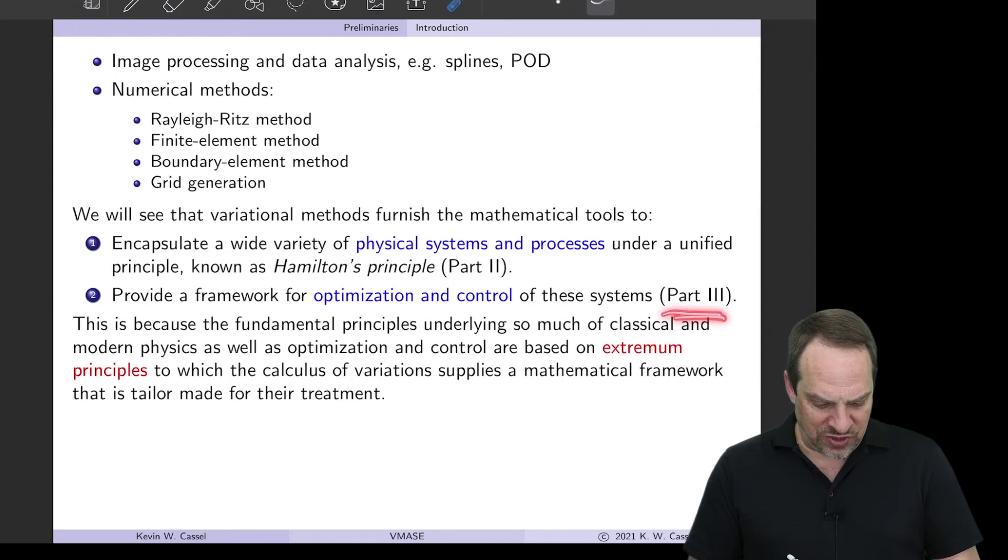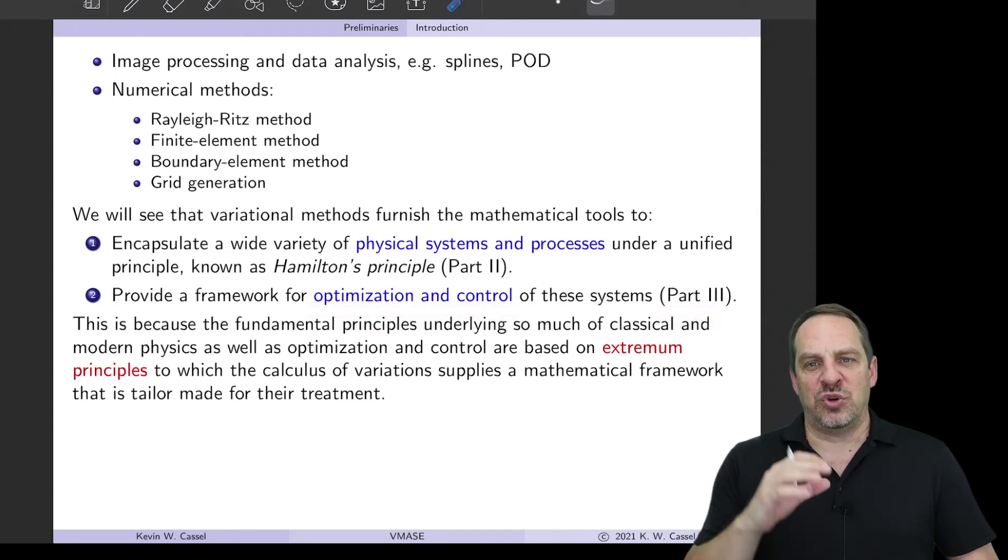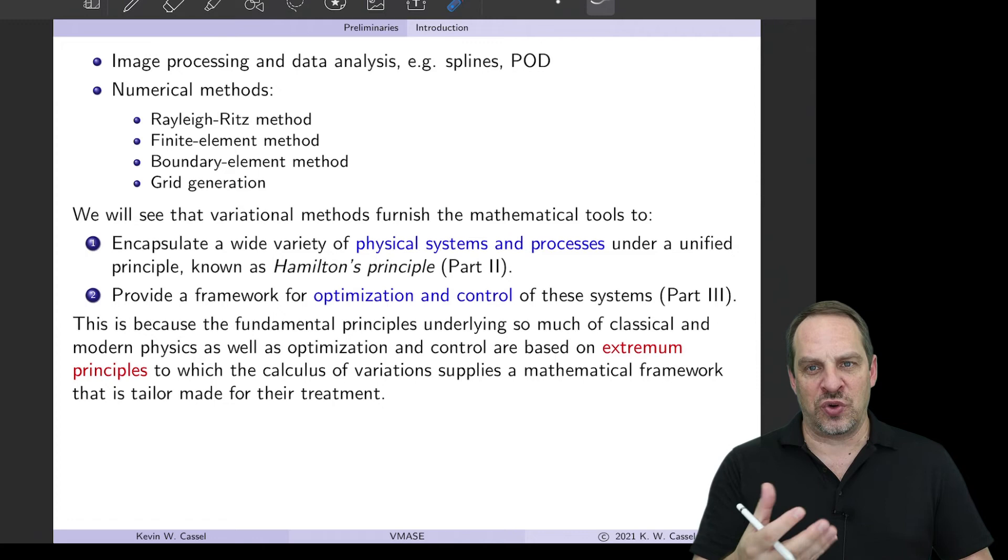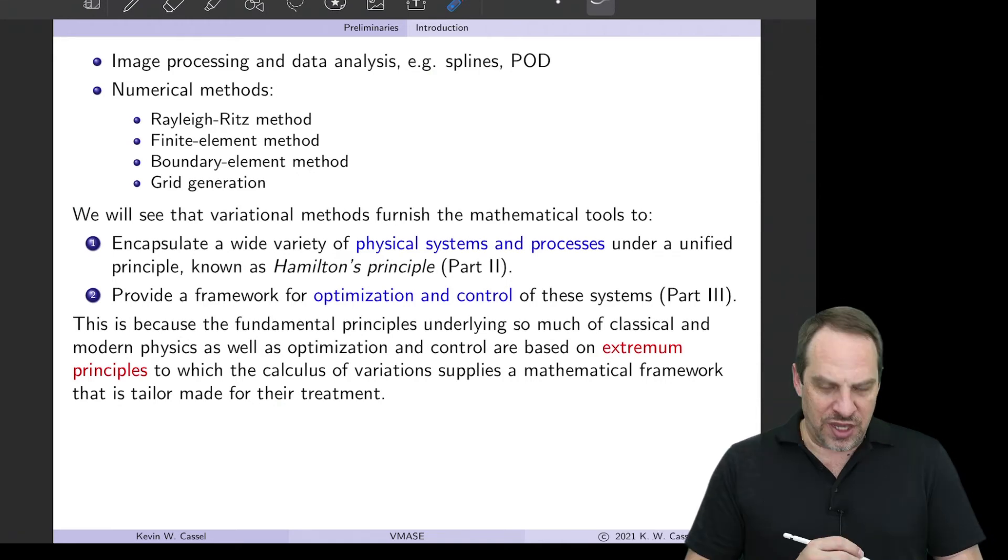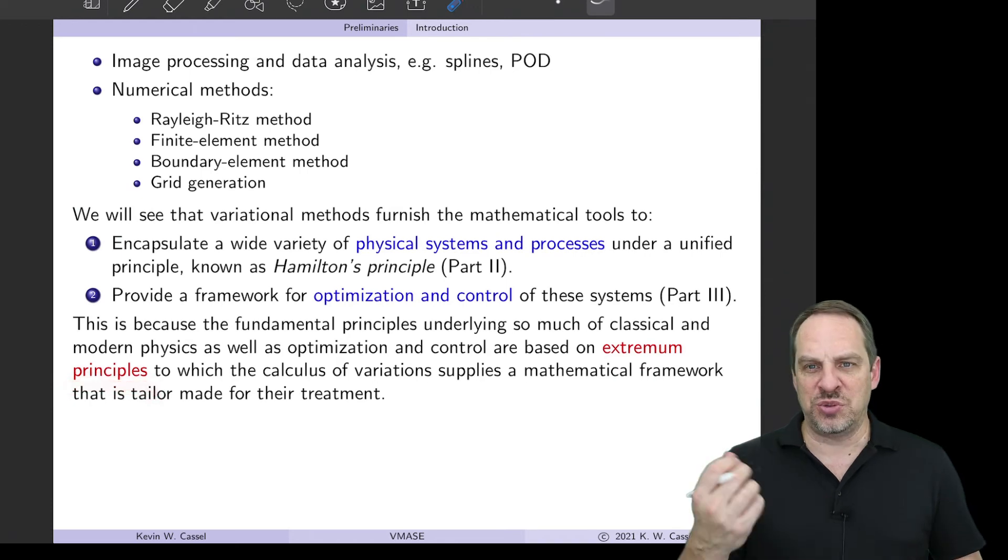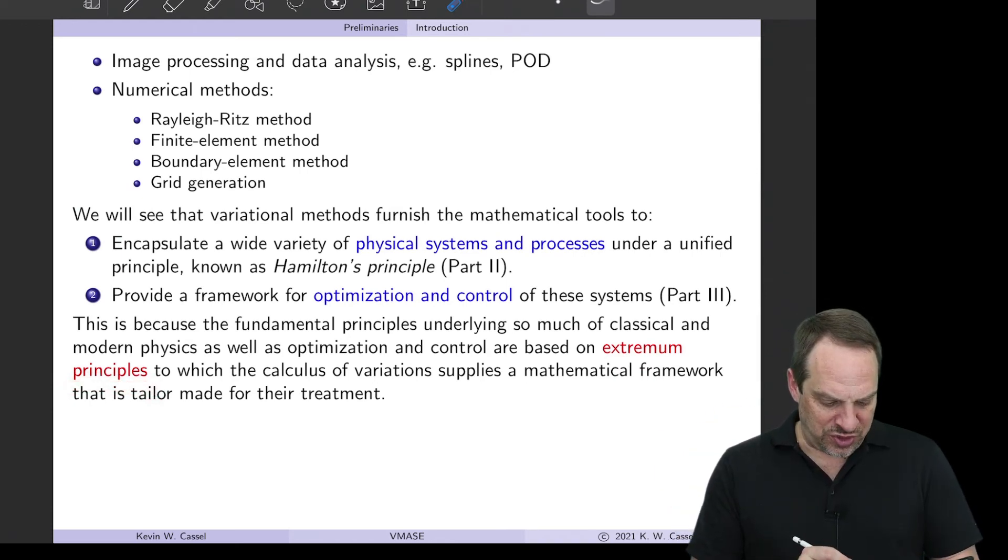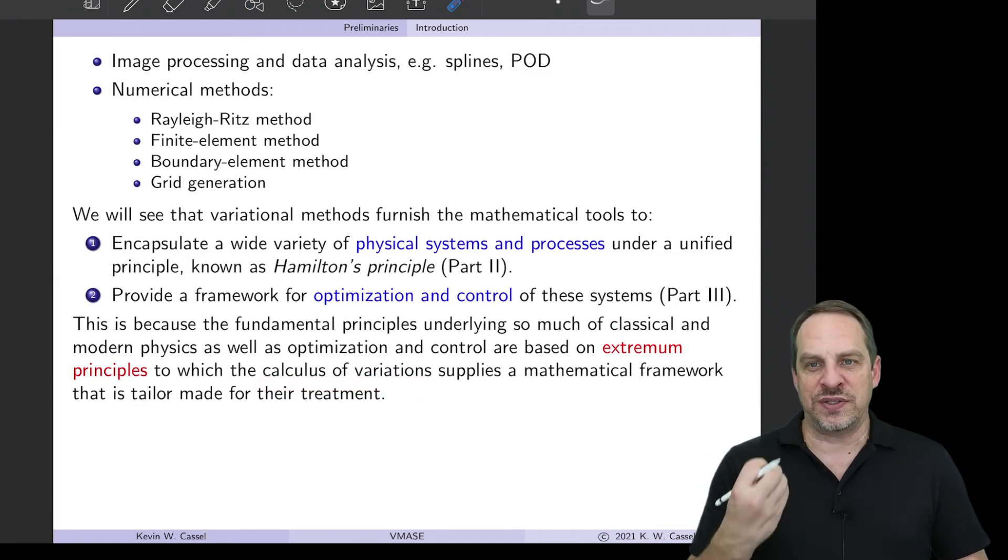And then all of part three is going to focus on the optimization and control of those systems. So both the physics behind how the system behaves, as well as our ability to control it in an optimal fashion, are both based on variational principles. And so this is going to be a really unifying, you're going to hear me say this term over and over again, unification of these principles within this variational framework. And the reason for this is because so many fundamental principles of physics, both classical and modern, are expressed in terms of extremum principles. And extremum is a minimum or maximum. And it's really in these extremum principles where the calculus of variations supplies this really powerful and unifying mathematical framework that is just tailor-made for treating these types of problems.